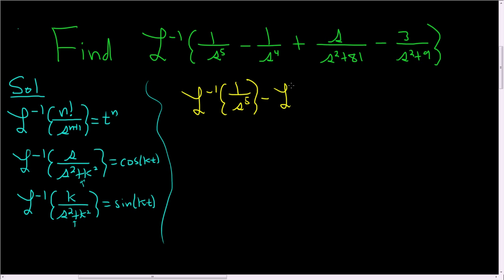So minus inverse Laplace of 1 over s to the fourth. And then same thing here, plus inverse Laplace of, now, well, I'll leave it for now. But we can think of 81 as 9 squared, so I'll go ahead and write it that way.